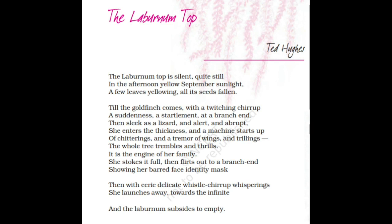'She stalks it full, then flirts out to a branch end, showing her bad face identity mask.' After feeding her babies, the goldfinch comes out of the thickness and sits on a branch end, showing her identity — the dark spots on her head. These dark spots are her identity mark, which she shows to her young ones as she turns to look back before leaving.